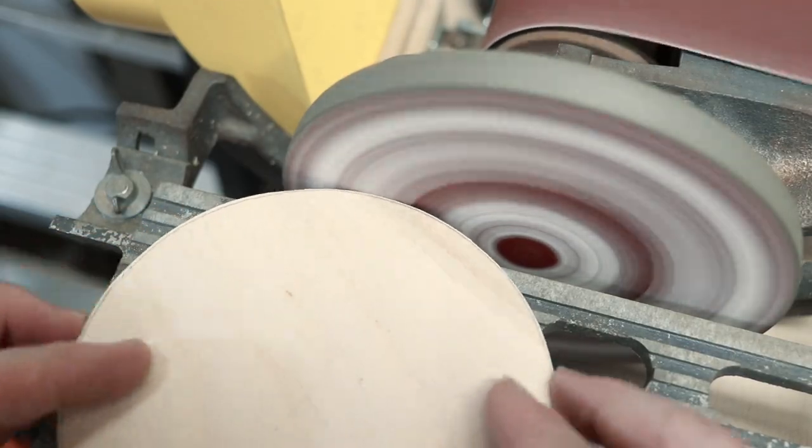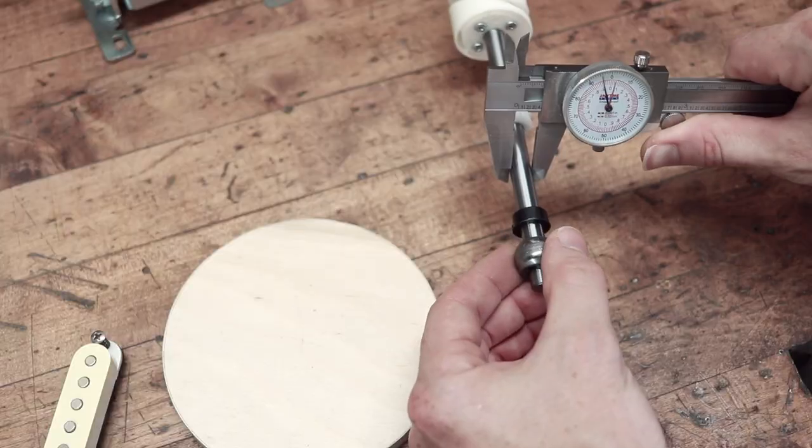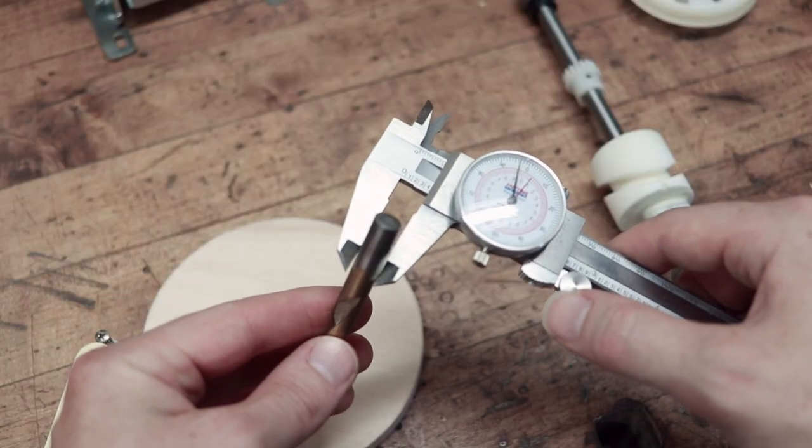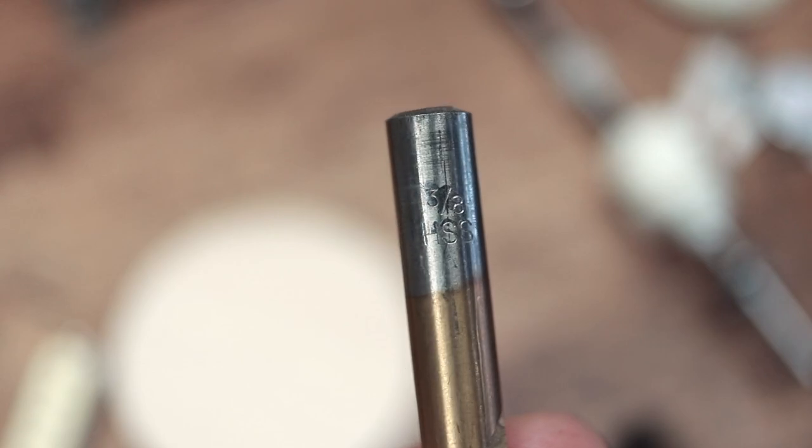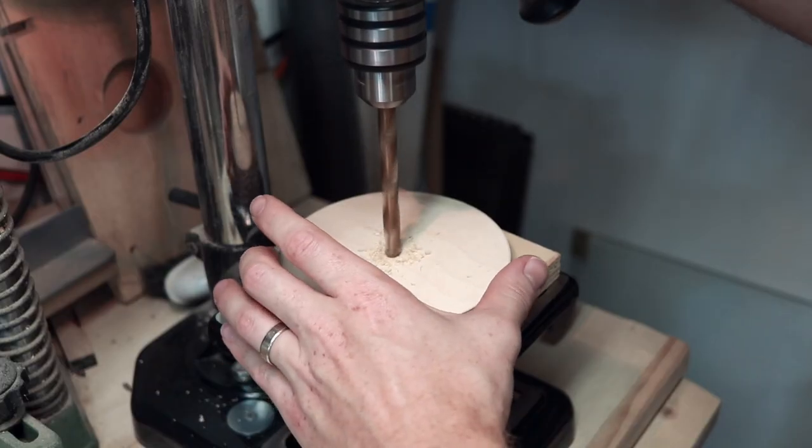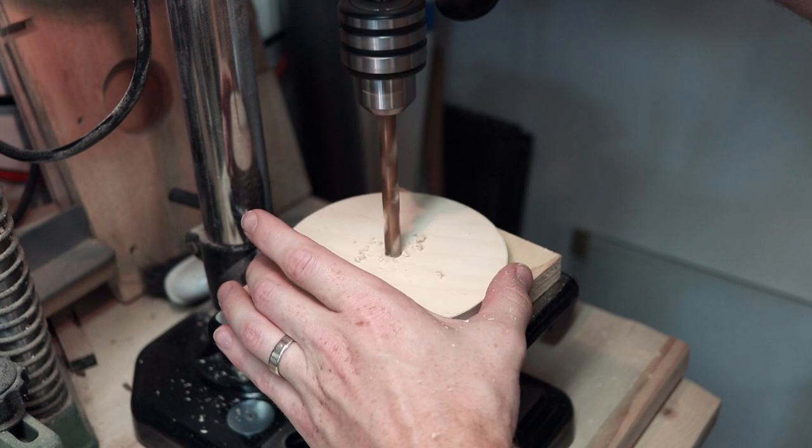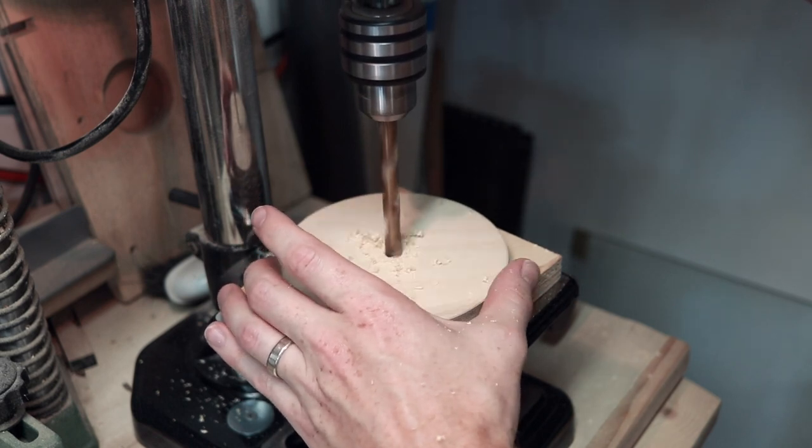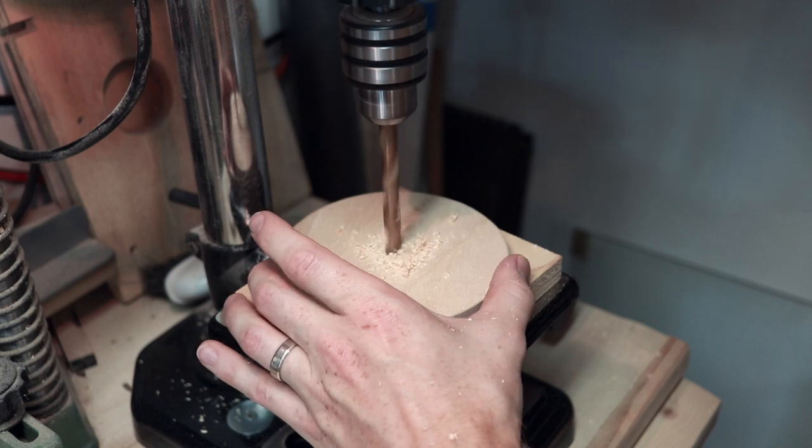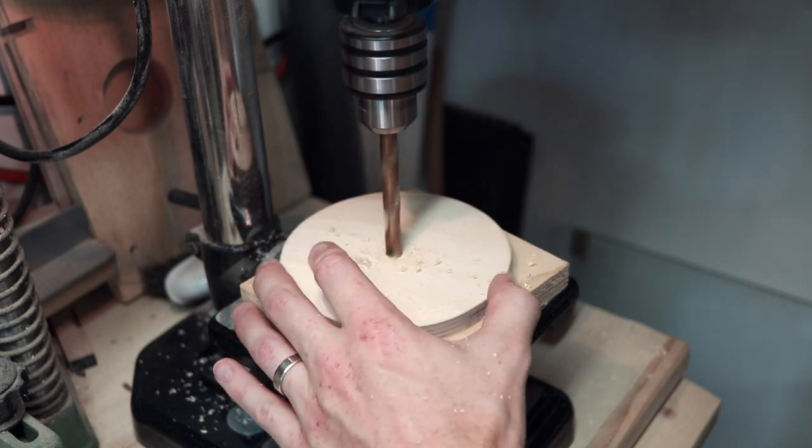Next I need to drill a hole in the middle and I wanted this to be undersized from what the shaft from the sewing machine is. So for me, this ended up being a 3/8 inch size drill bit and I can put that in the drill press and then rotate the disc every so often while I'm drilling the hole so I can get as perpendicular of a hole as possible since this will help have less wobble on the disc when it's all said and done.